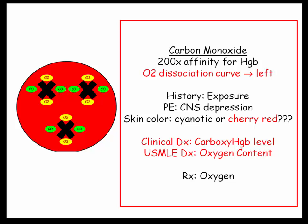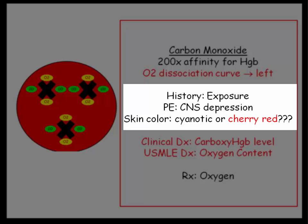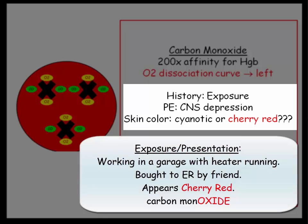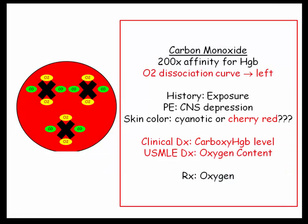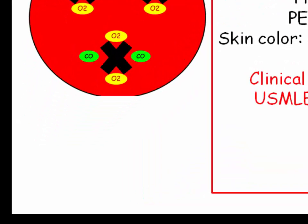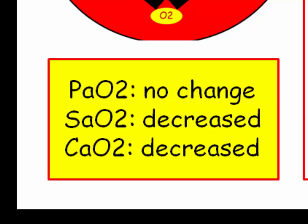This slide summarizes what we just reviewed. There is increased affinity for hemoglobin, and the oxygen dissociation curve shifts to the left. In terms of identifying a carbon monoxide question, they will describe an exposure invariably related to working in a closed garage with a heater running. The patient would have been passed out and brought to the ER by a friend. From the color point of view, carbon monoxide is still a form of oxygen, so the skin will be described as cherry red, not cyanotic. The footprint of a carboxyhemoglobin question: PaO2 — no change; oxygen saturation — decreased; oxygen content — decreased.